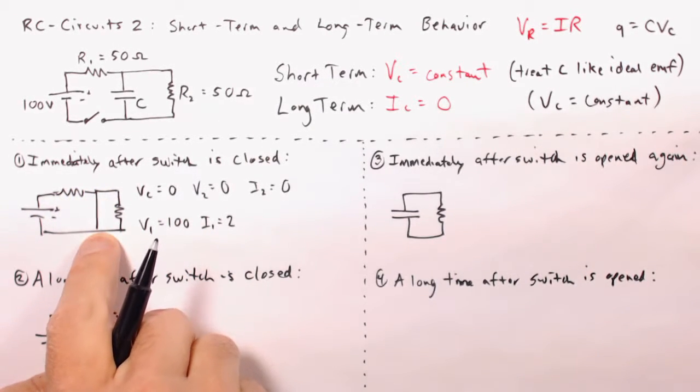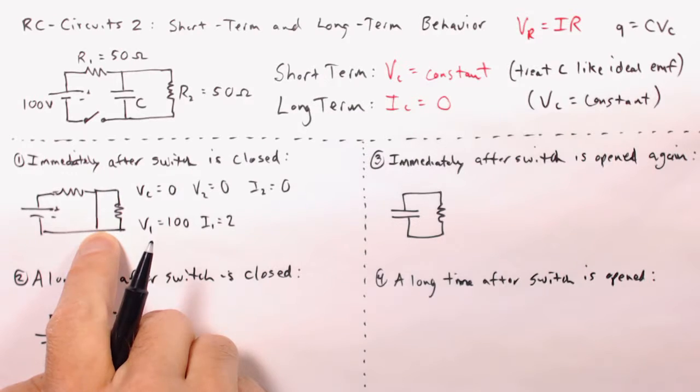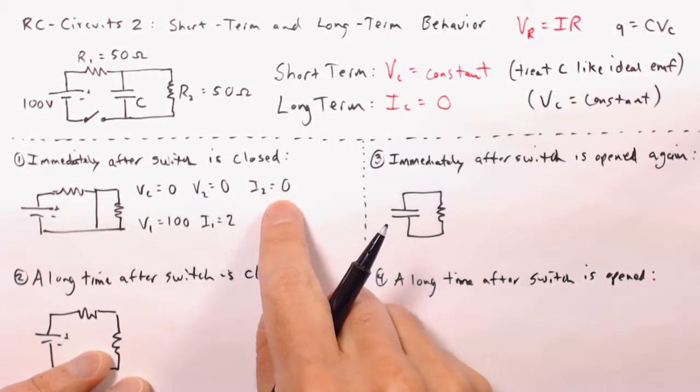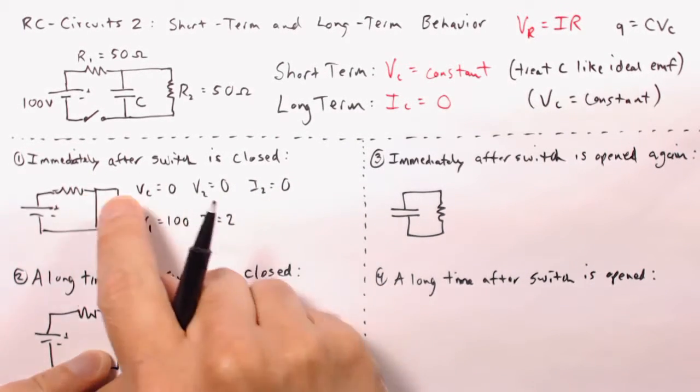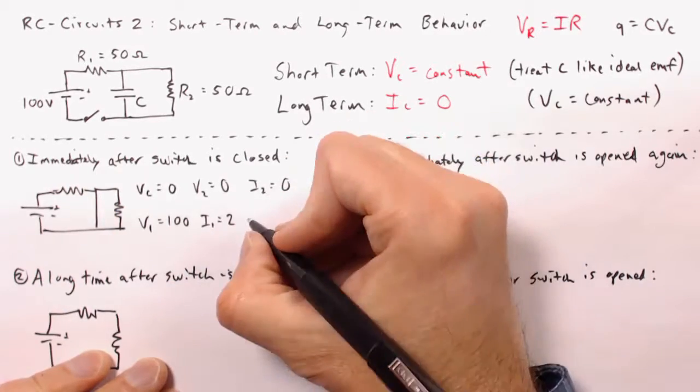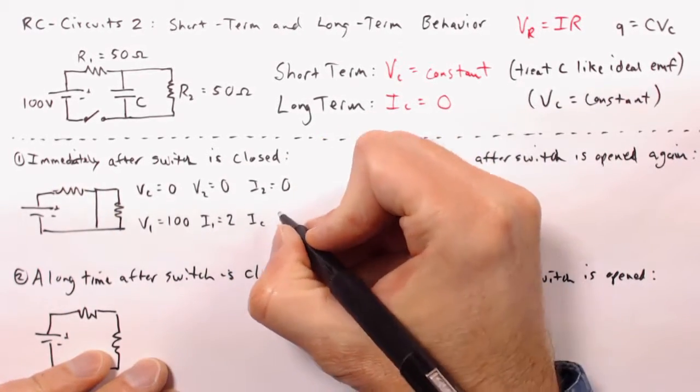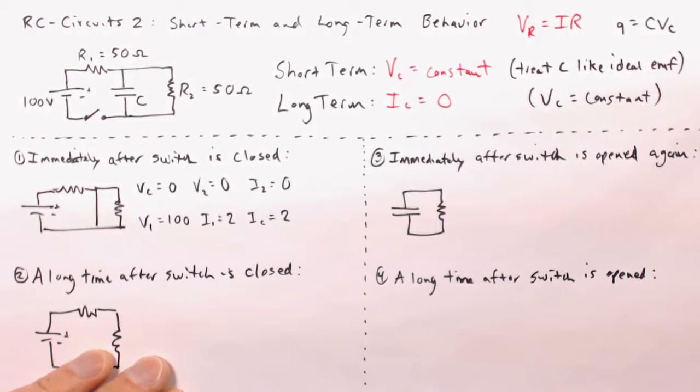It can either go through the resistor or go through the capacitor, but it's not going to go through the resistor, because we already determined I2 is zero, therefore all of the current must flow down through the capacitor, and that means the IC is equal to two amperes as well.